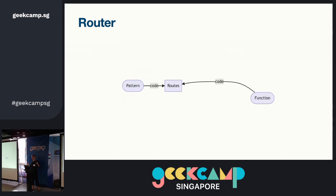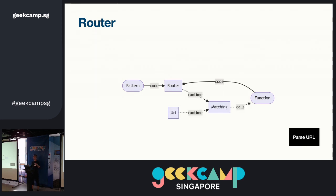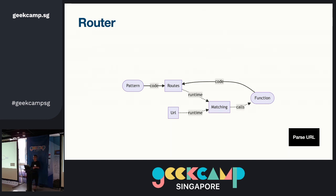Let's look at what a router is. It's a pattern that you write, and then your function that you call comes together. During runtime, you put the URL and your match and call your function. Simple. This is the past URL portion, which is very important.